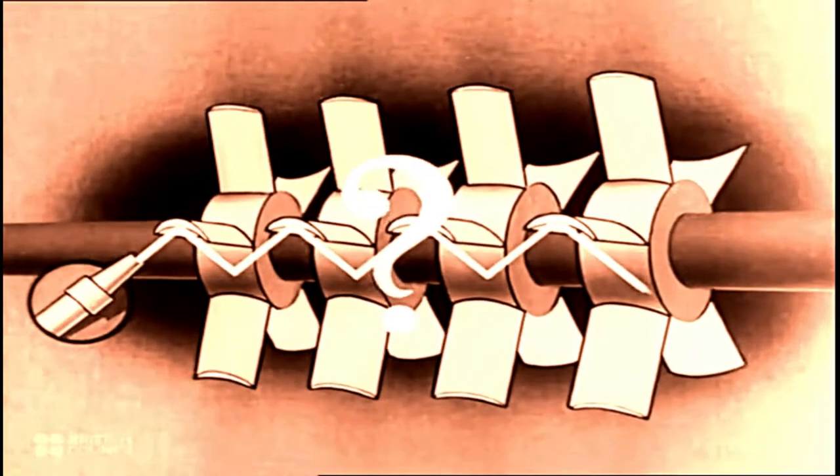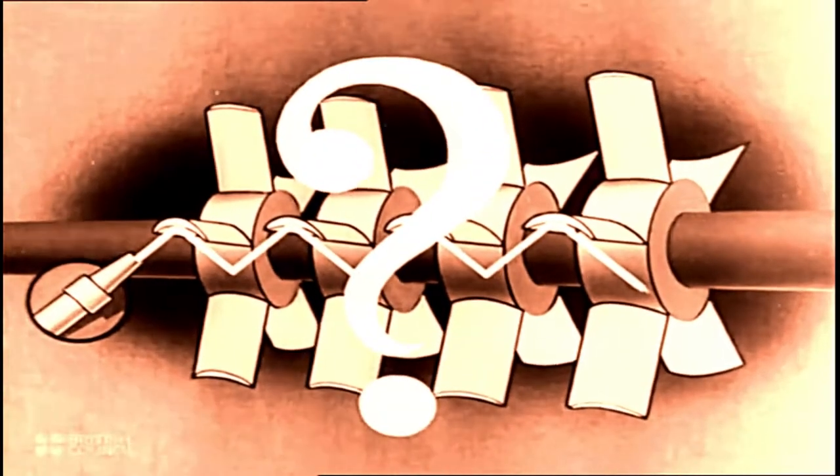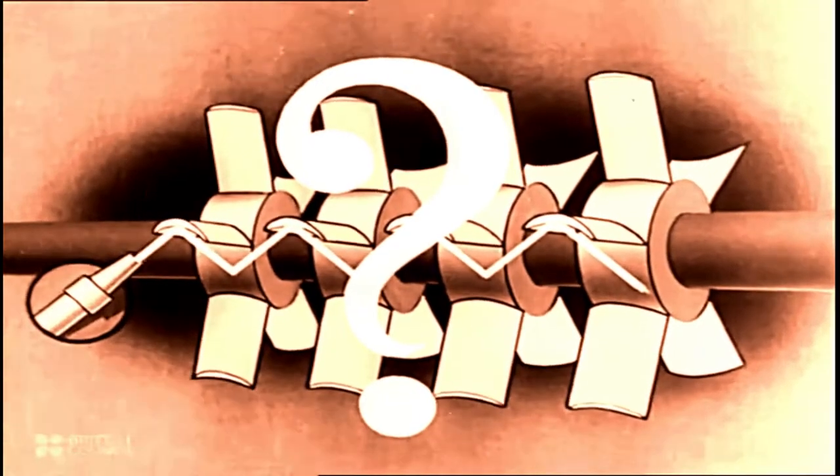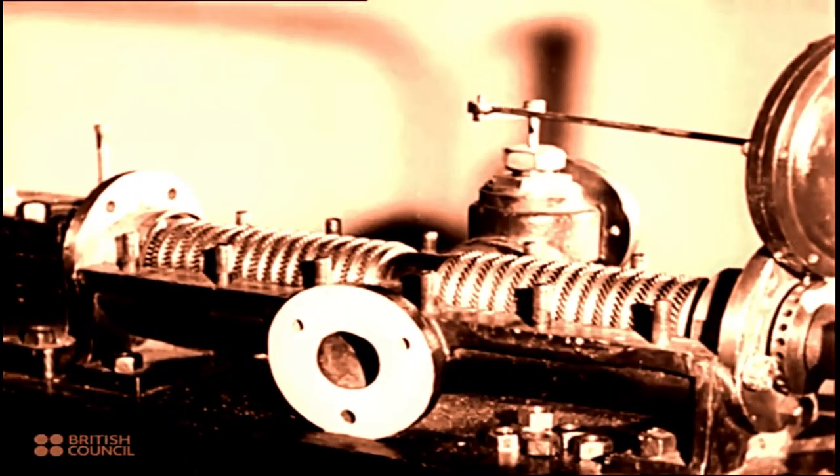The problem was to redirect the steam and concentrate it through a jet onto the other wheels. This is how Parsons solved the problem.